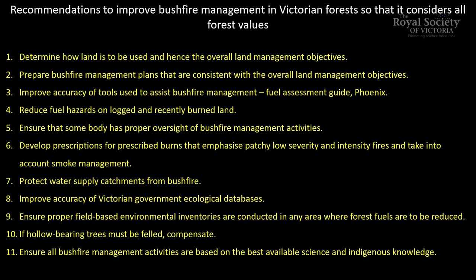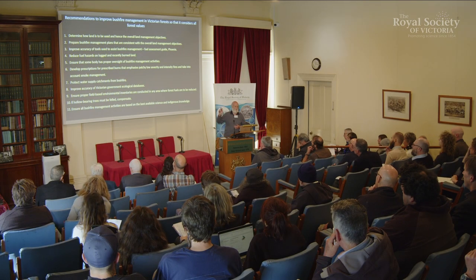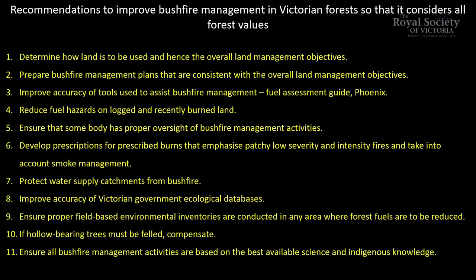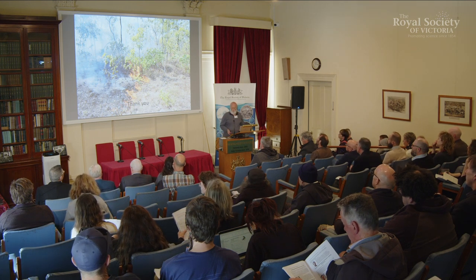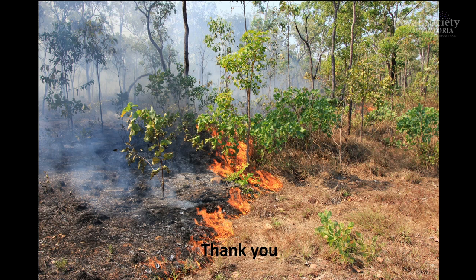One of the key things is that bushfire management should be subservient — subordinate — to land management. The land management objectives should determine what you do. There are many things that should be done to improve it. Tools need to be improved. The practice of fuel reduction burning needs to be improved. And if you are going to use fuel reduction burning, try to emphasise lower intensity, lower severity, patchy type fires, similar to indigenous burns. If you're going to cut down trees, first figure out what you've got — do inventories, which are currently not done. And you should always monitor the impacts. That final image shows a fuel reduction or ecological burn in the Northern Territory — an indigenous burn. Thanks.